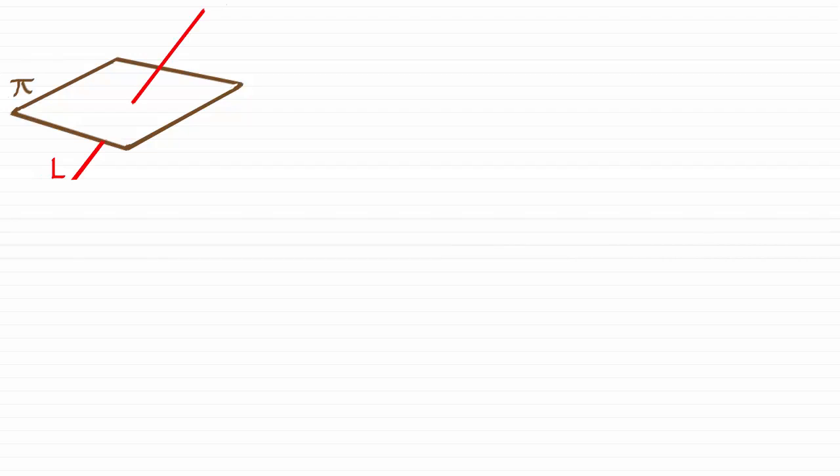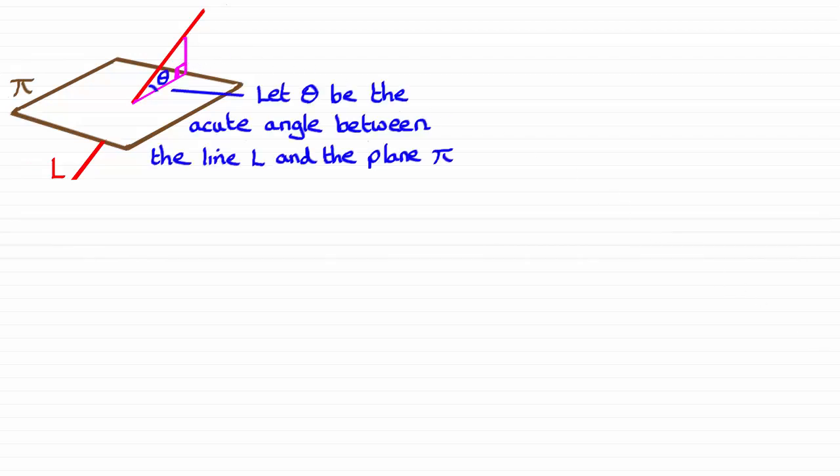Now in order to find that acute angle theta between the line and the plane, what we've got to do is imagine taking a point on this line here and dropping a vertical triangle onto the plane. And if we make that triangle a right angle triangle, then the angle theta that we're looking for is this one marked in here.